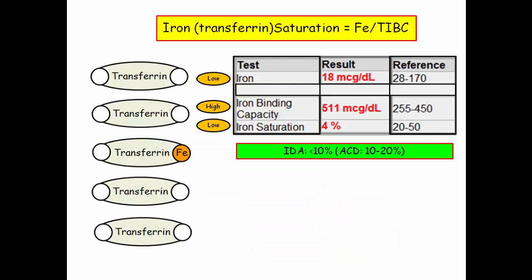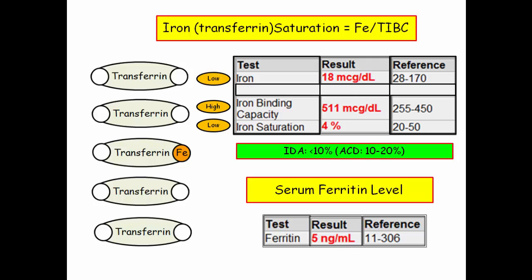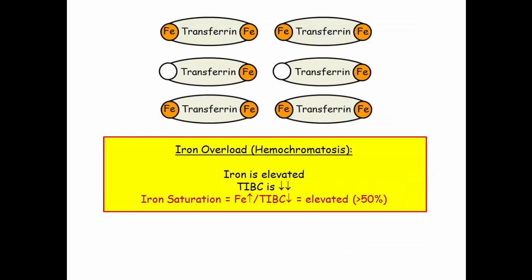Iron saturation, also called transferrin saturation, is simply the ratio of iron to TIBC. In iron deficiency anemia, as shown in our patient, the iron to TIBC ratio is 4% — iron of 18 divided by iron binding capacity of 511 equals 4%. That is very low. The lab lists the normal saturation in the 20 to 50% range. Iron deficiency anemia is diagnosed with a value of less than 10%. Anemia of chronic disease is generally below normal, but not by much. A low serum ferritin confirms the diagnosis of iron deficiency anemia. By comparison, in iron overload, a high iron level and low binding capacity gives a high saturation greater than 50%, which is one of the tests used to screen for hemochromatosis.